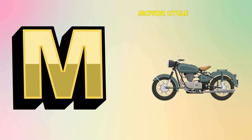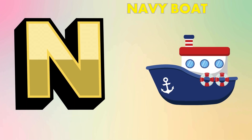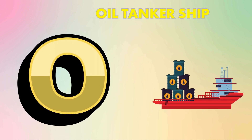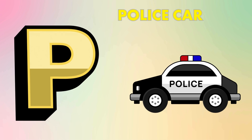M is for motorcycle, motorcycle. N is for navy boat, navy boat. O is for oil tanker ship, oil tanker ship. P is for police car, police car.